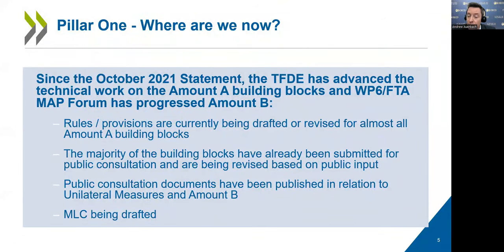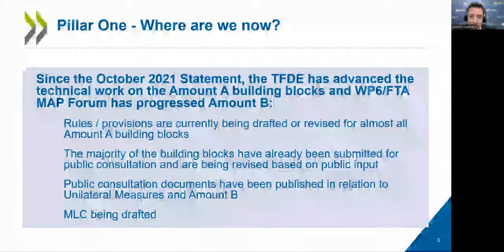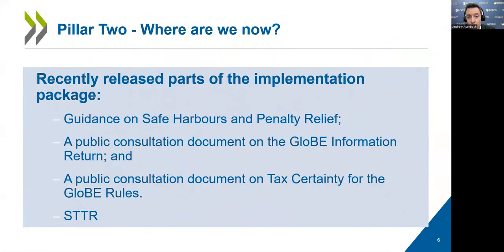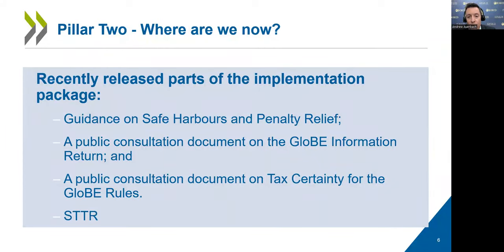A big part of that work has been the economic impact assessment, because it allows countries to understand the impact of the deal and how different aspects will affect their financial bottom line. Importantly, whereas Amount A and Amount B are works in progress, the GLOBE minimum tax rules have been agreed. Right now we're working on parts of the implementation package through the working parties and inclusive framework membership, ensuring consistent implementation and coherent administration.